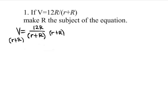Our first step is to multiply both sides by r plus R so the one on the right side cancels out. You then end up with V times r plus R equals 12R. The next step is the distributive property.